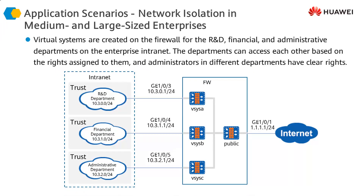Why would we need this? The applications of a virtual firewall are simple and obvious. One application could be that we have a big physical firewall in which we create multiple logical firewalls — vSys A, vSys B, and vSys C — each created to serve one department of our organization. For example, an R&D department, a financial department, and an administration department, each with a separate logical firewall configured within the same physical firewall.